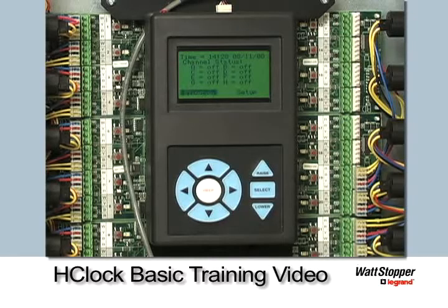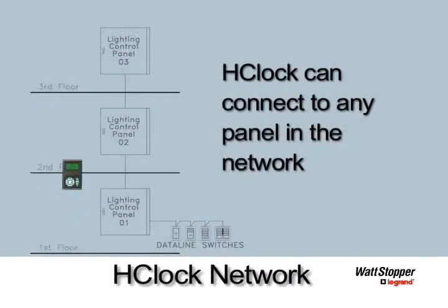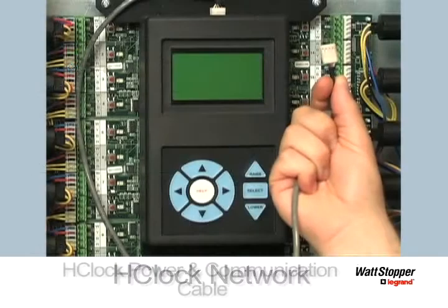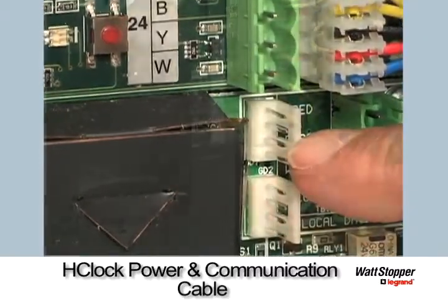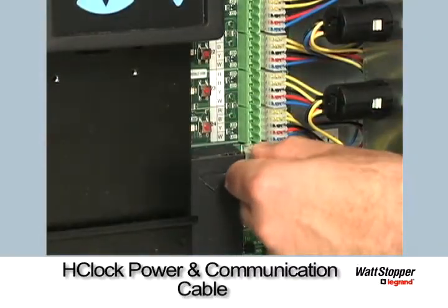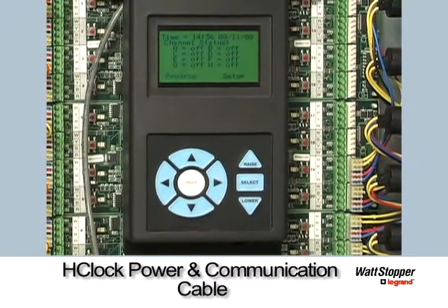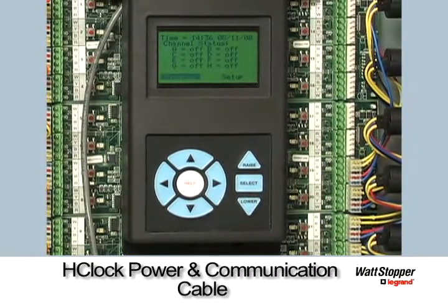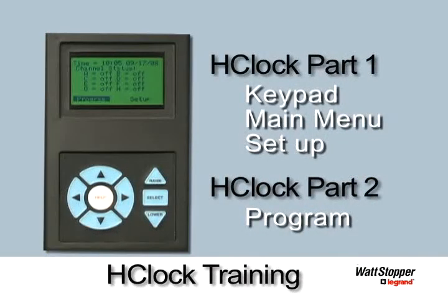The clock can also be converted to a data-line switch programmer. The H-Clock can be connected to any panel in the network and provide scheduling automation scenarios for all panels on the network. Simply plug the power and communication cable into one of the connectors. Seeing channel status displayed on the main screen indicates that you have power. You are now ready to set up and program the clock. This H-Clock Basic Training Video Part 1 will cover how to use the keypad, view the main menu, then set up the unit.